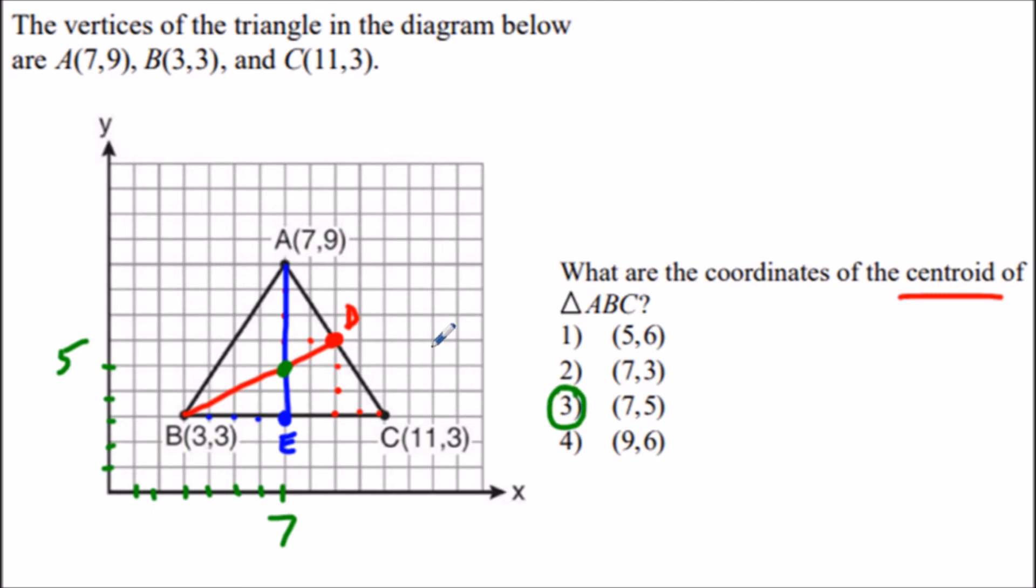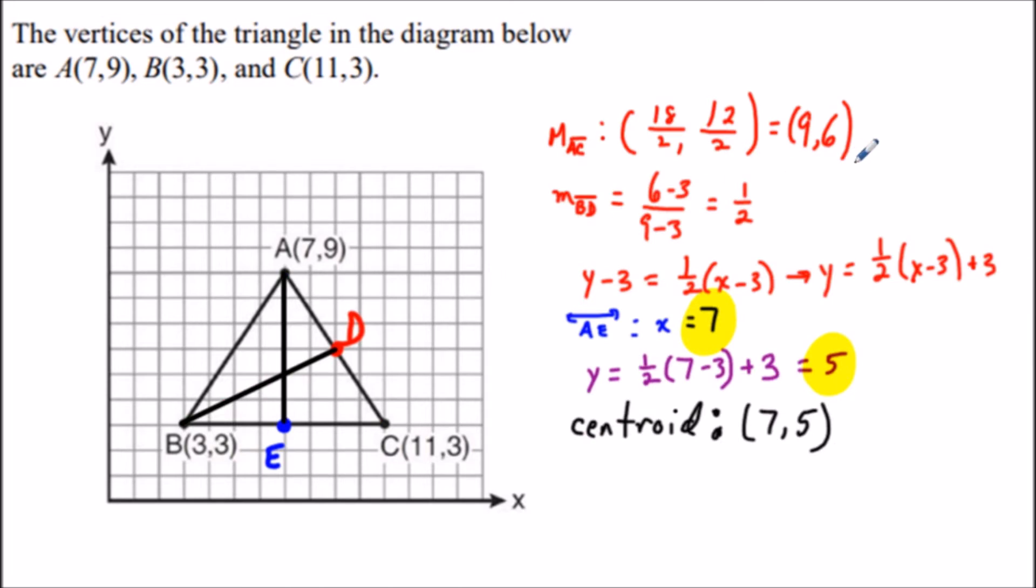If the visual method doesn't work for you, you could also do this algebraically. We find the same midpoints D and E, then write the equation of the line through points B and D, and the equation of the line through points A and E.